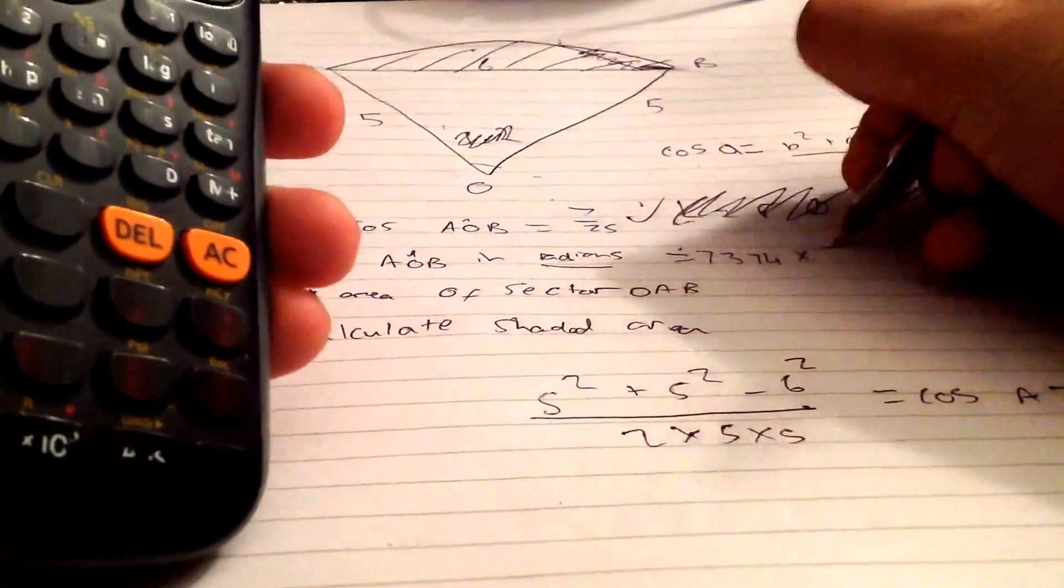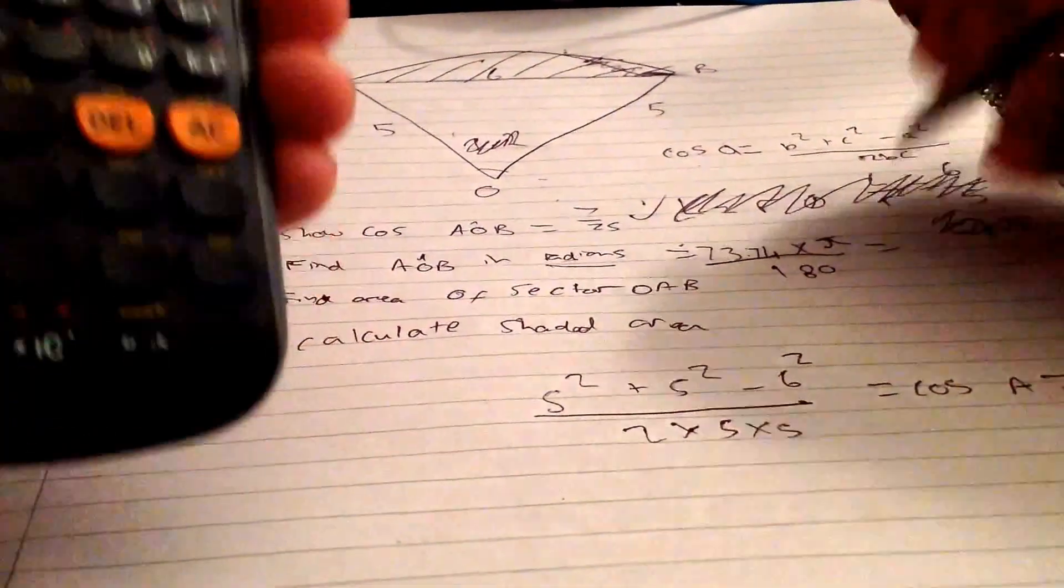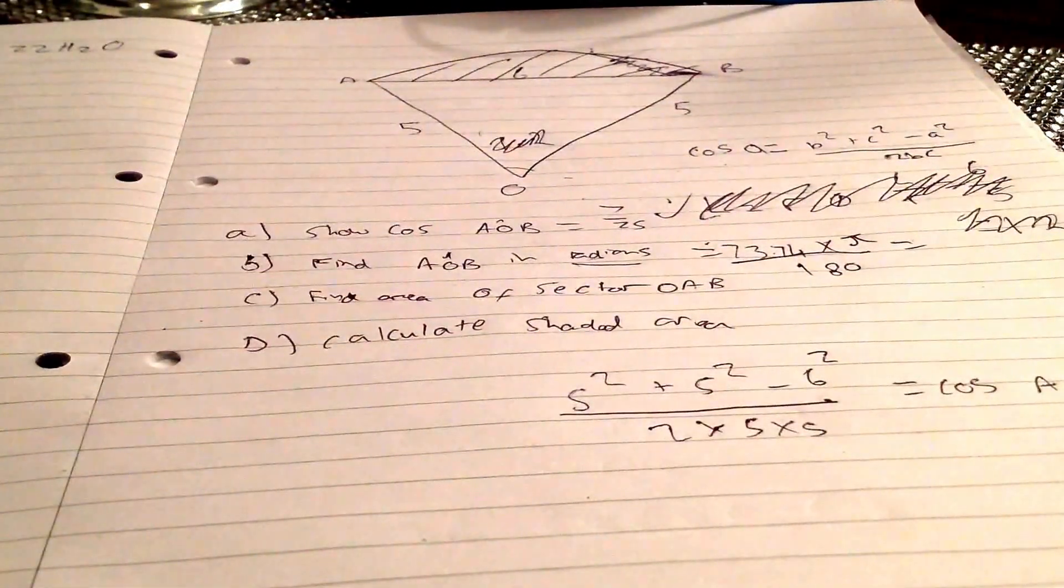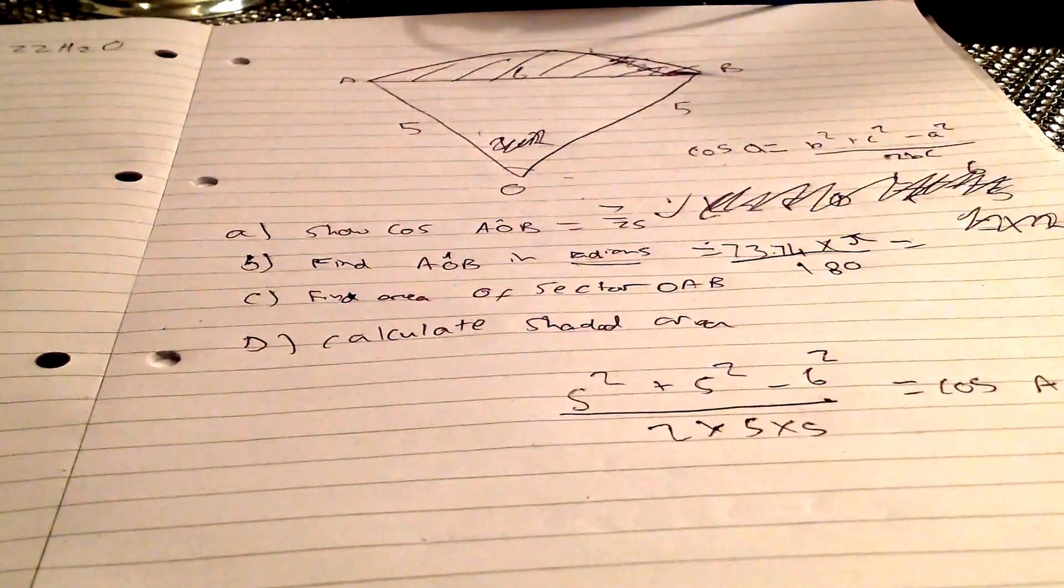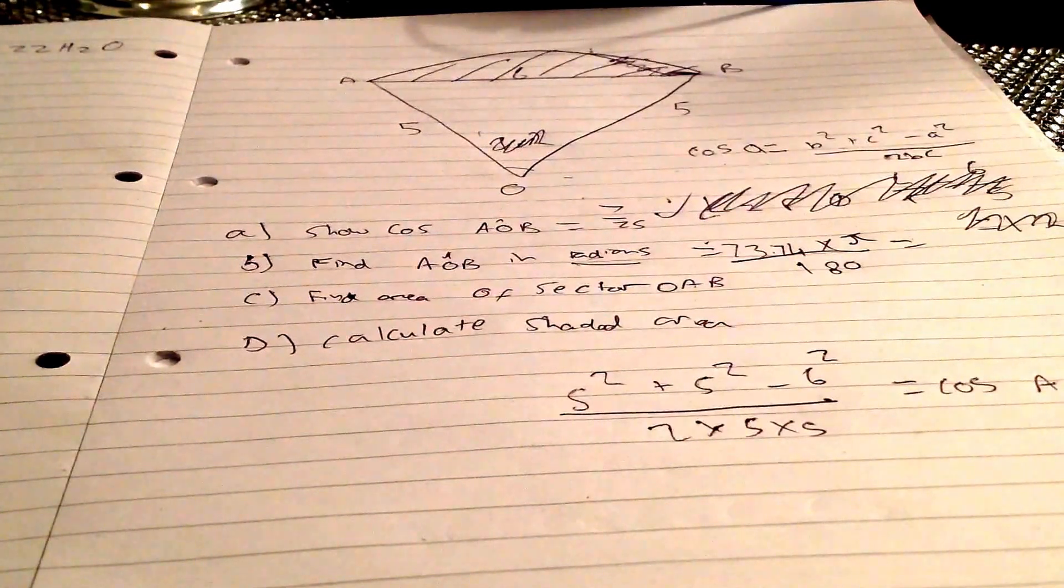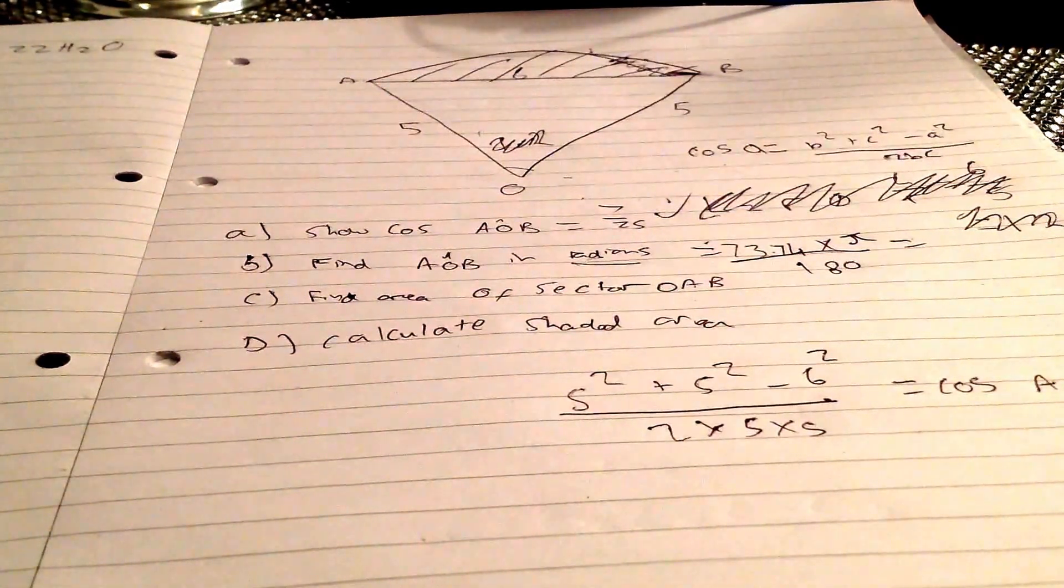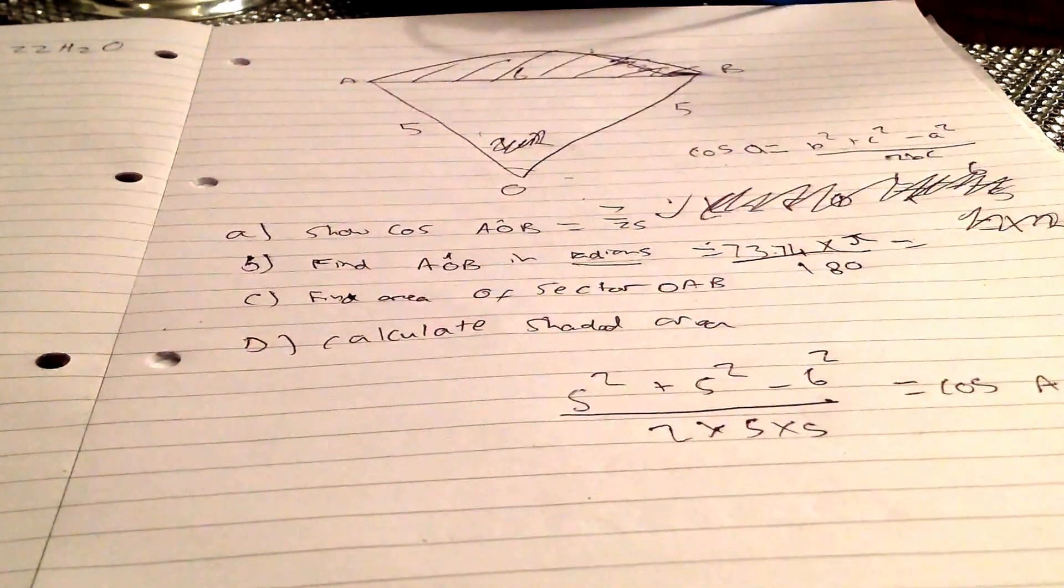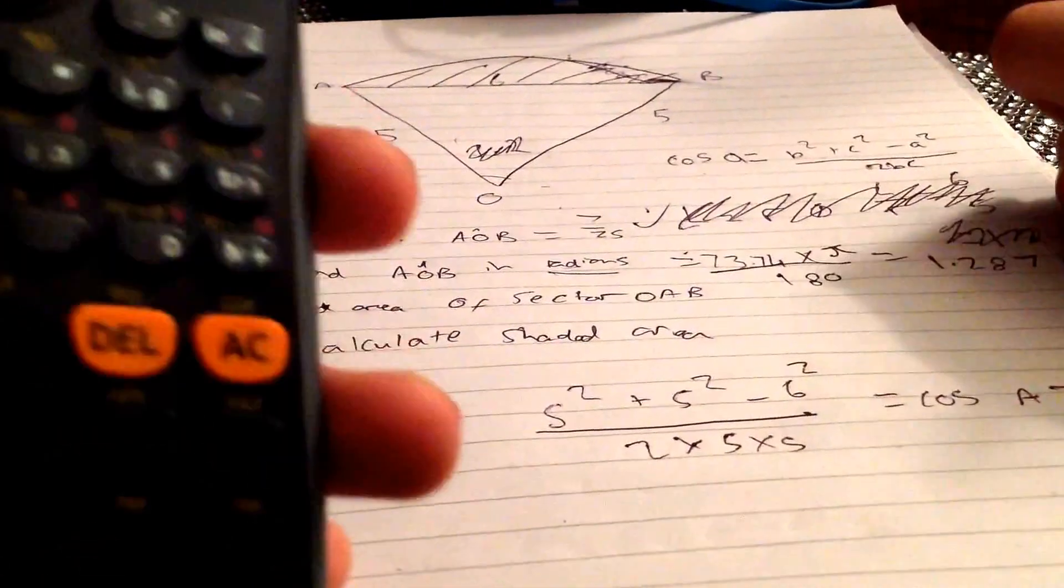We need to times it by pi and divide by 180. But first, always remember to put your calculator in radians. 73.74 times by pi, divide that by 180, and you should get an answer of 1.287. I know that's right.